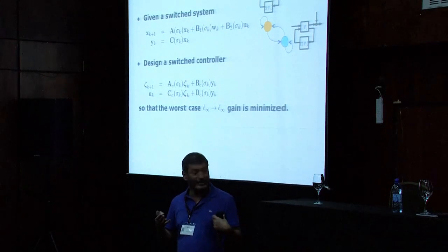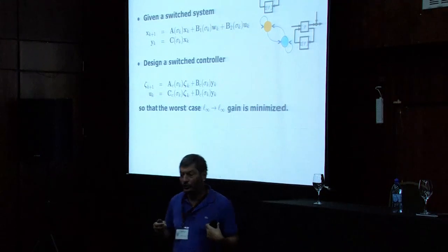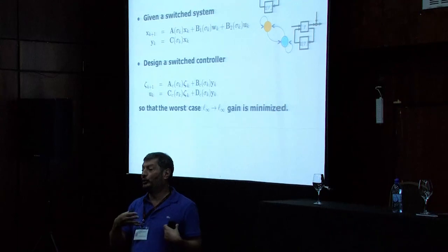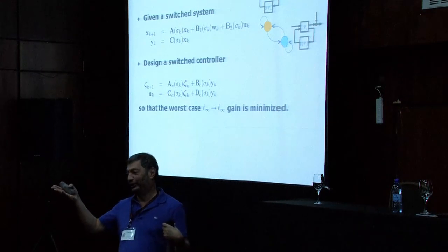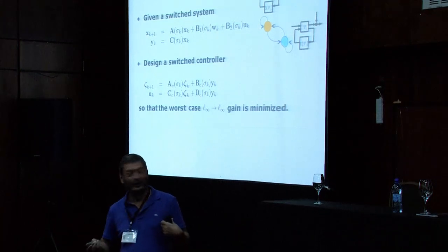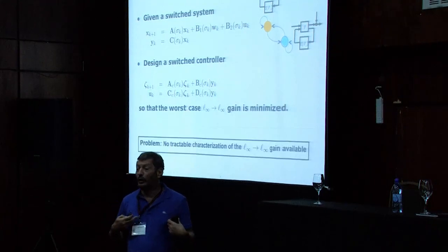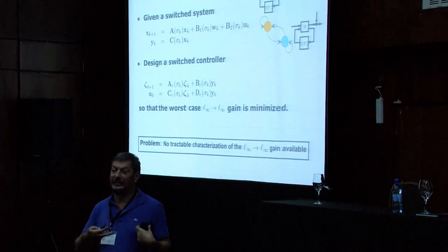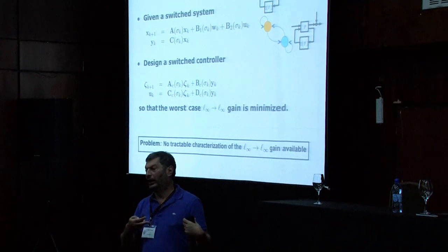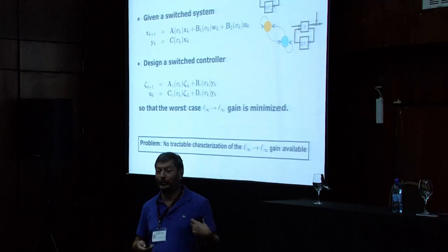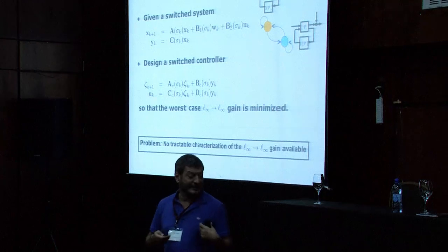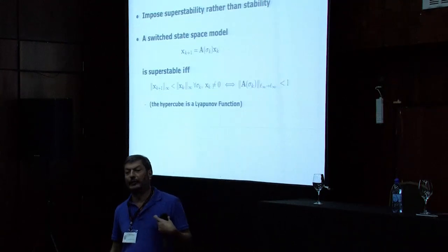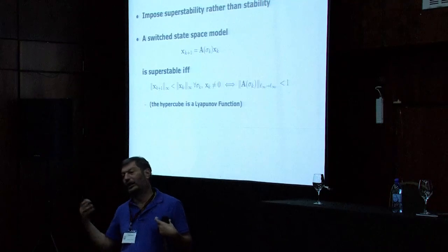Mathematically, I'm giving you a switched system — or think of this as an LPV — and I want to design a switched controller so that the worst-case L-infinity to L-infinity norm is minimized. If this was the L2 to L2 norm, we're done. But there's no tractable characterization of the L-infinity to L-infinity induced norm. Rather than imposing stability, I'm going to impose something called super-stability. This is something we worked on with Franco Blanchini in the early 2000s, and also Mark Halpern and Boris Polyak.